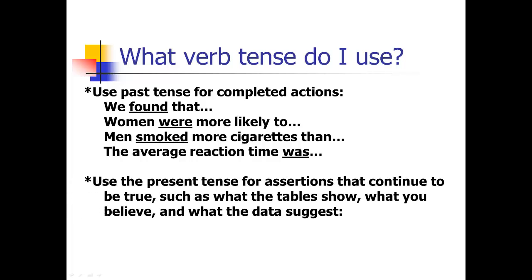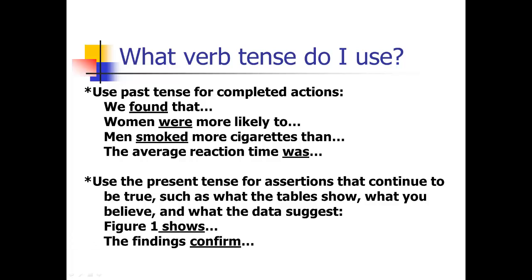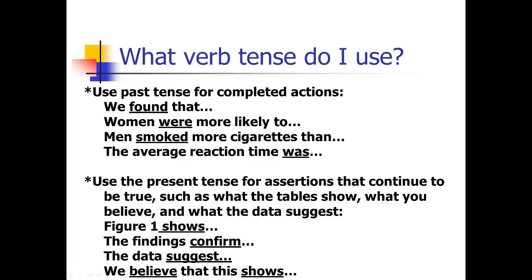However, use present tense for things that continue to be true when your reader reads the paper. If you say 'table one shows something' — that's present tense, because when your reader reads the paper the table is still showing that. 'What the data show' or 'what the data suggest' — still true when your reader reads it. So: 'figure one shows,' 'the findings confirm,' 'the data suggest' — those are all present tense because they remain ongoing and true at the time the reader reads the paper.